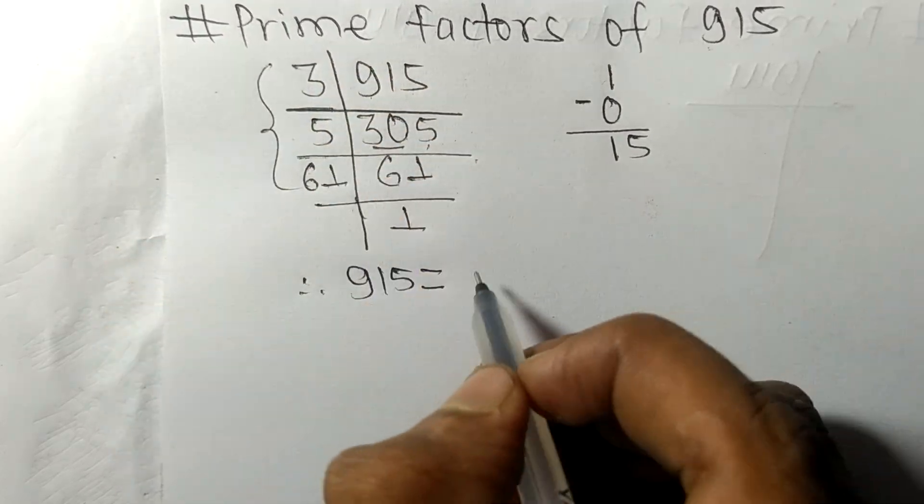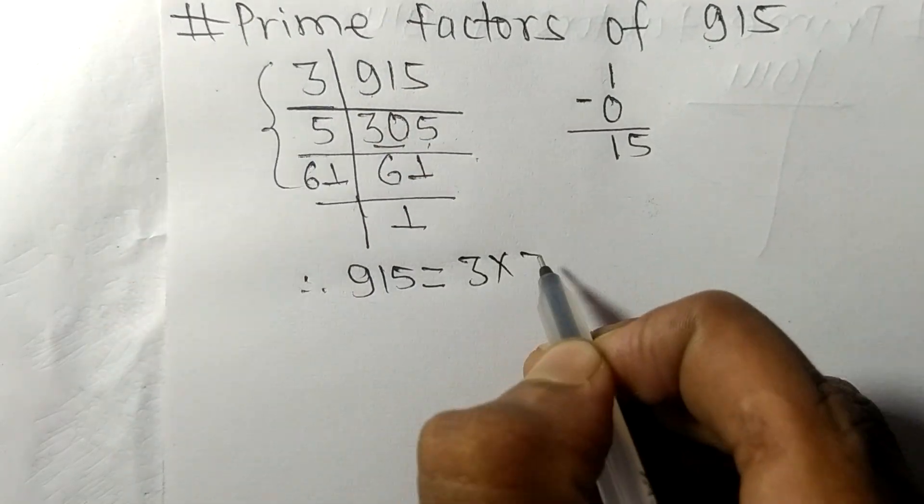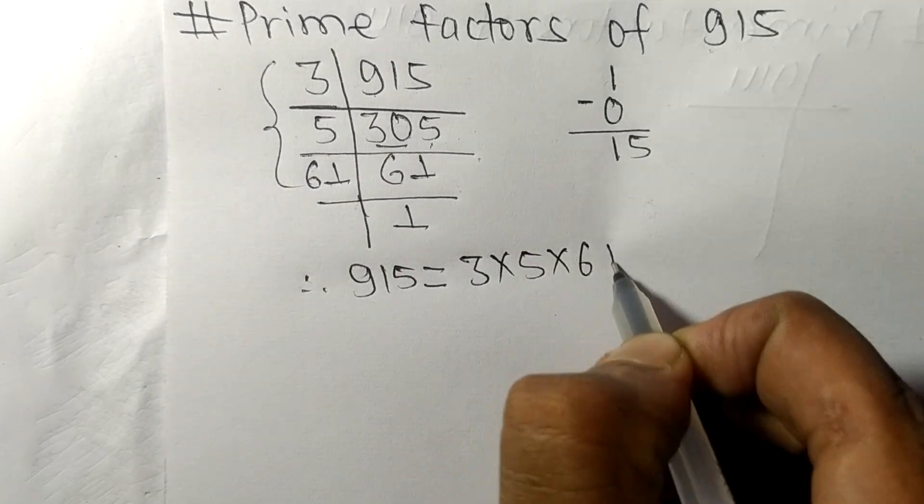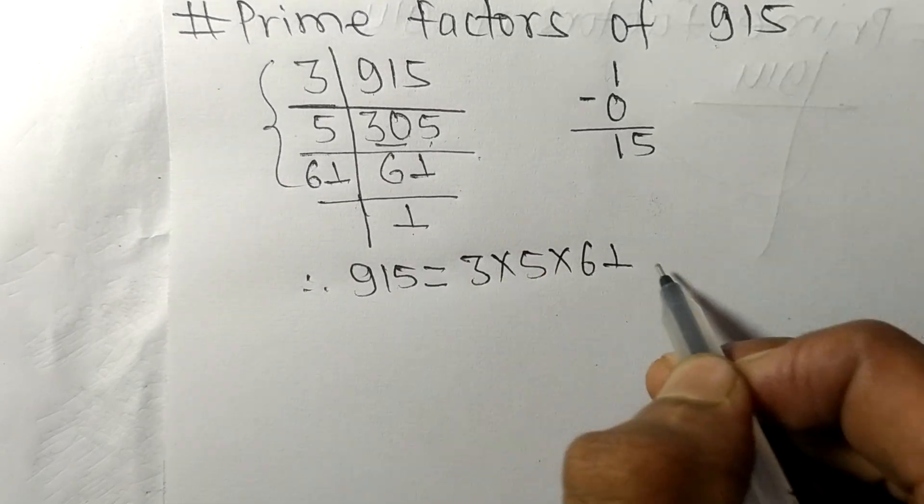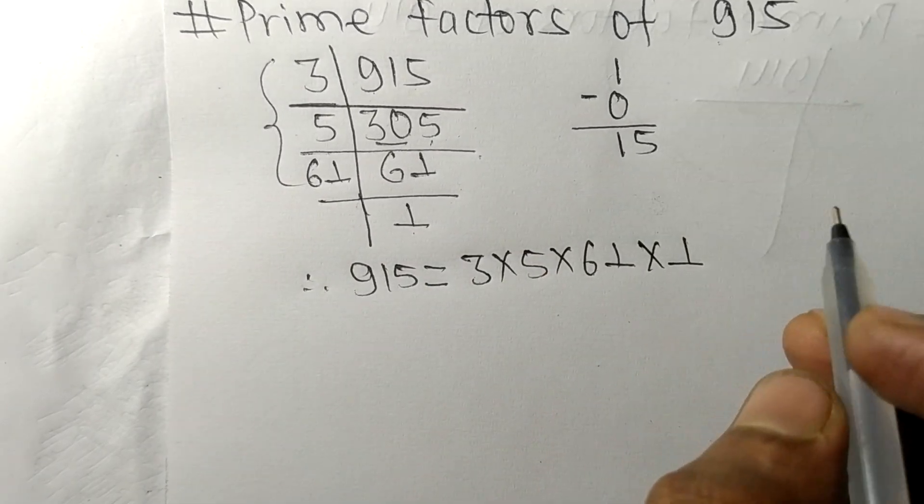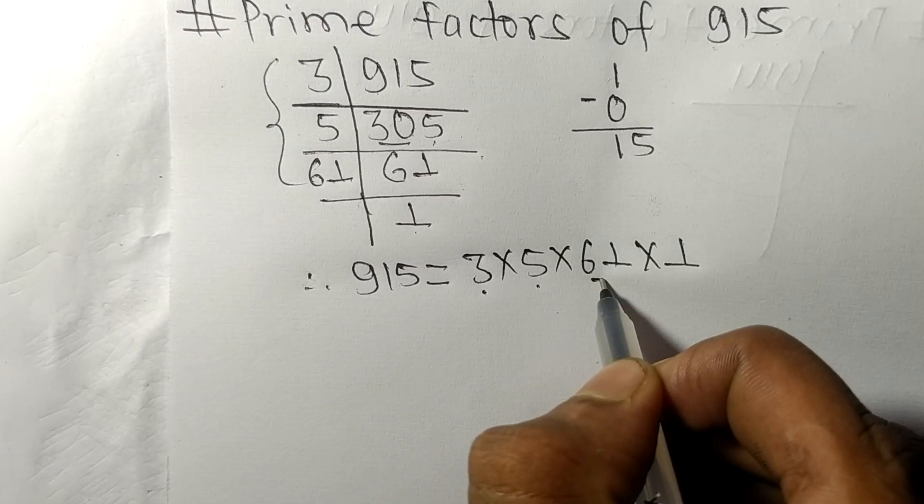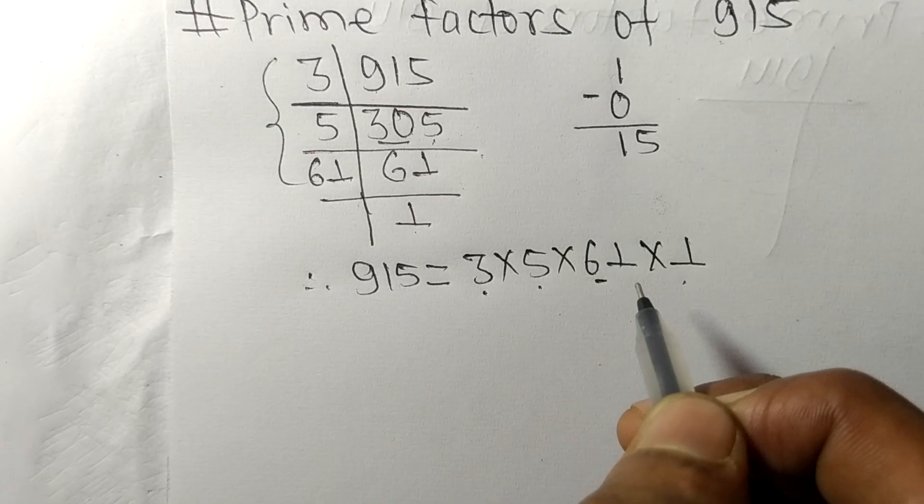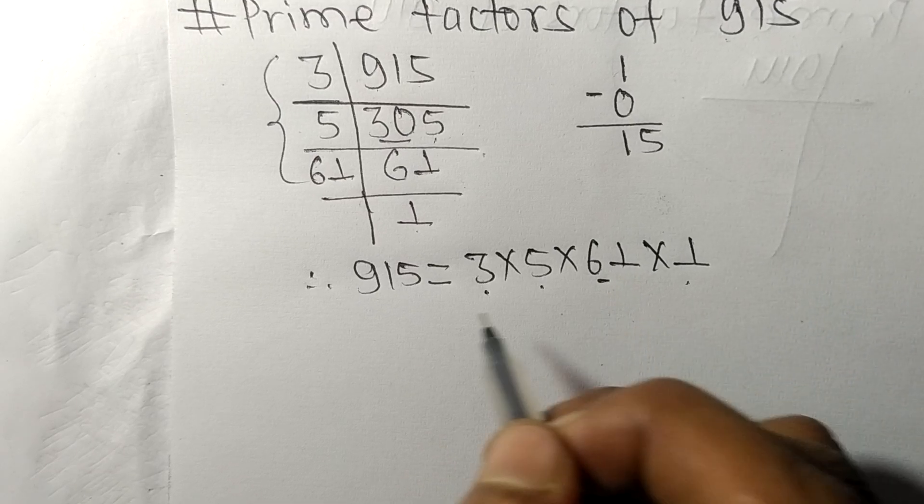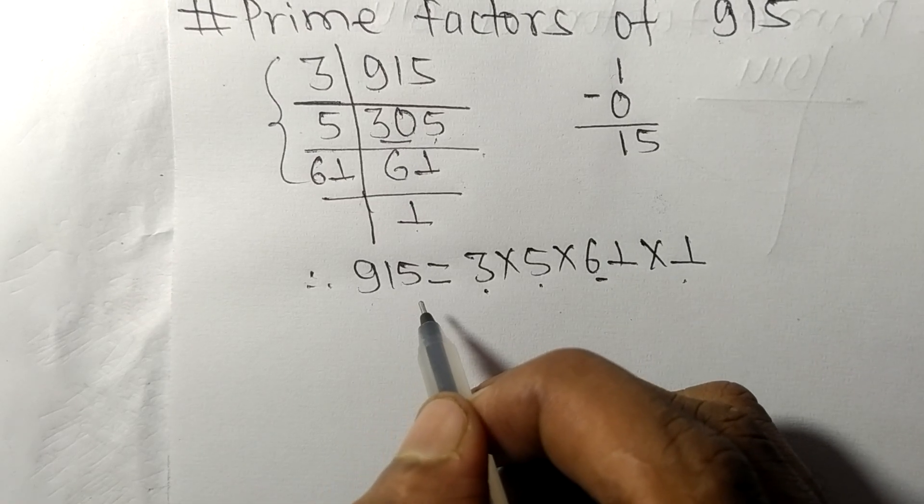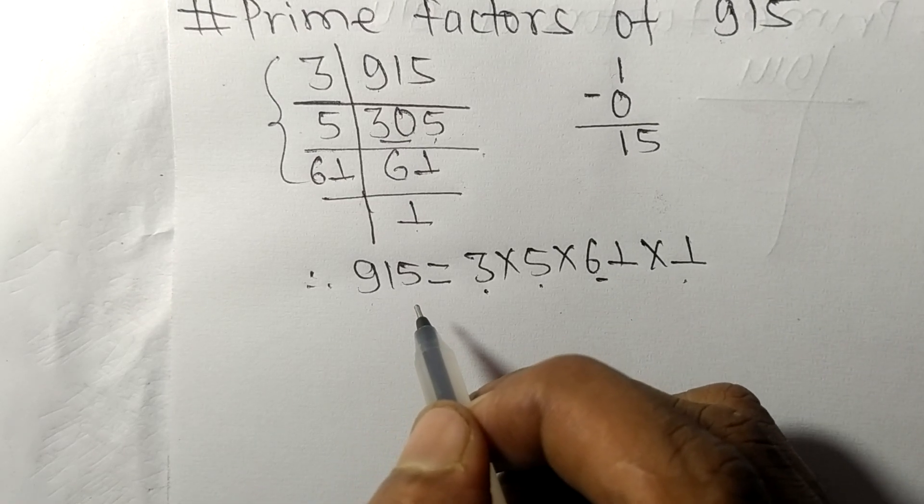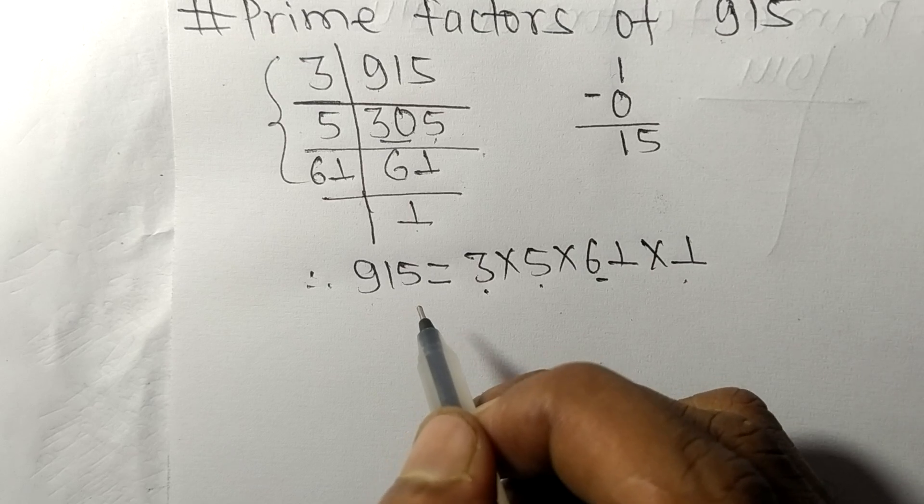3 times 5 times 61 times 1. So 3, 5, 61, and 1 are the prime factors of 915. That's all for today, thanks for watching.